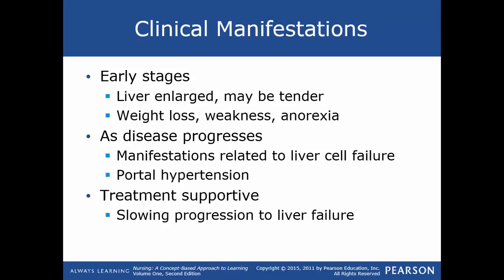In the early stages of cirrhosis, the liver is enlarged and may be tender. Patients may have a dull aching pain in the right upper quadrant, weight loss, weakness, anorexia, diarrhea, or constipation. As the disease progresses, manifestations related to liver cell failure and portal hypertension develop. This causes impaired metabolism leading to bleeding, ascites, gynecomastia in men, infertility in women, jaundice, and neurologic changes.